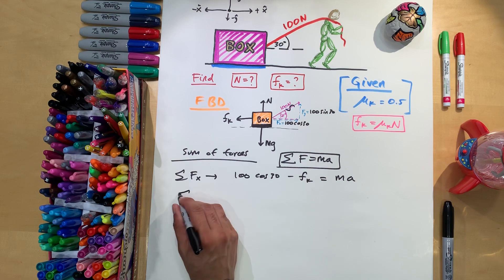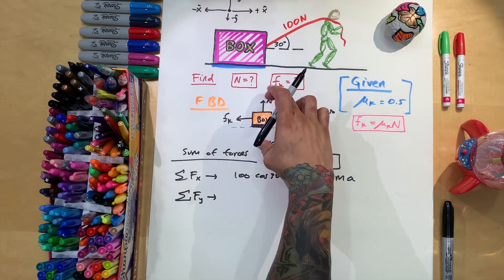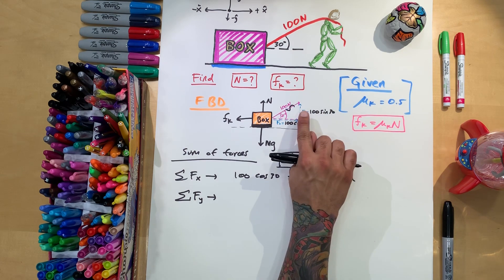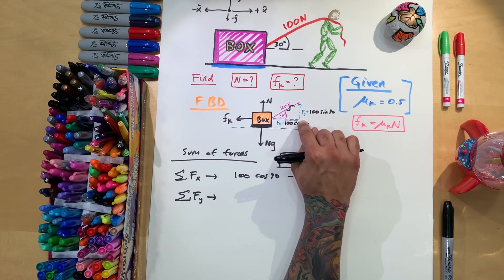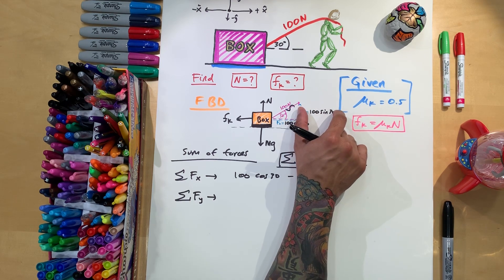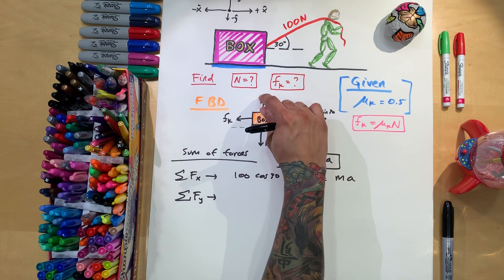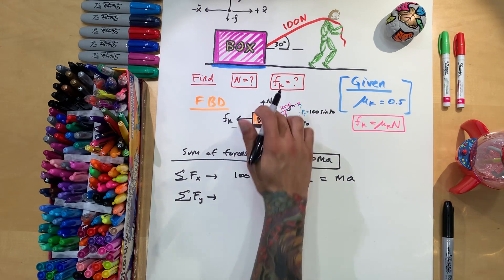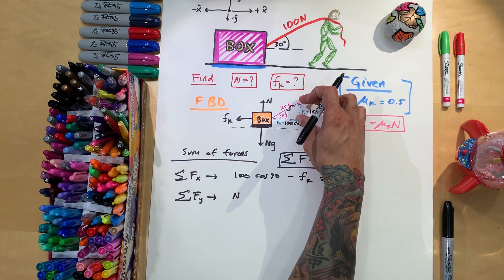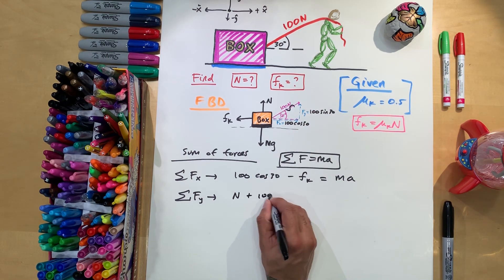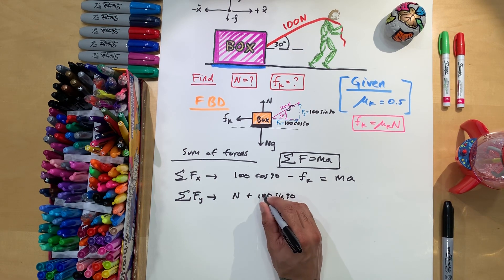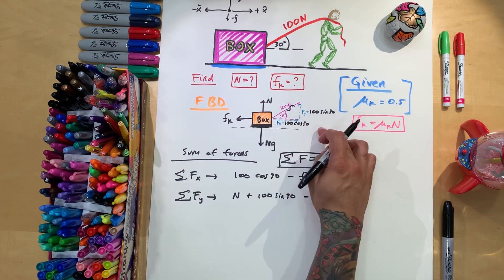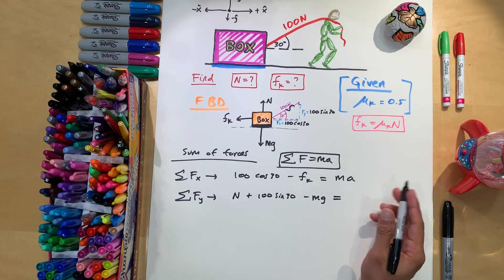And then let's do the sum of forces in the y. We got these two forces. And this is another part that a lot of students mess up on you broke this one into two components an x and a y. So don't forget that you have this y component here also. So now you have three things. You have the normal, you have mg, which are both in the y direction. And you also have this. So the normal is positive because it's going up. This one here is positive. So it's going to be plus 100 sine of 30. And we got negative mg because it's in the downward direction below the horizontal. All of that is equal to zero.